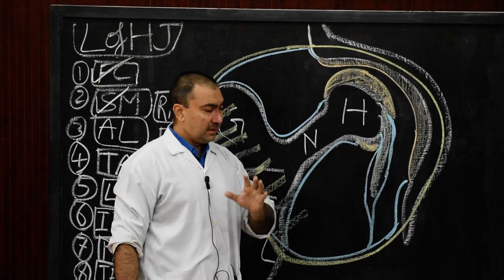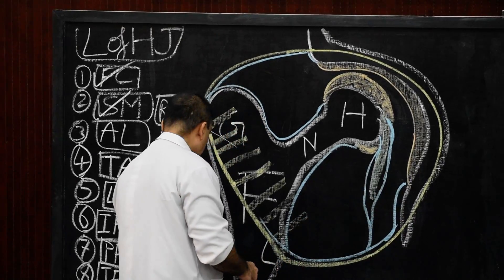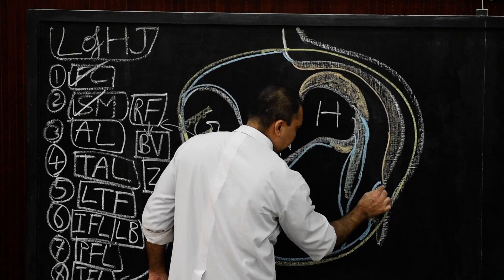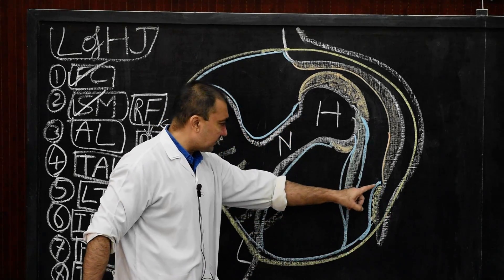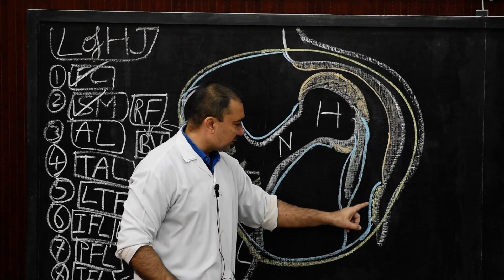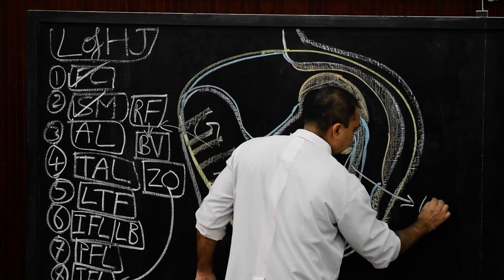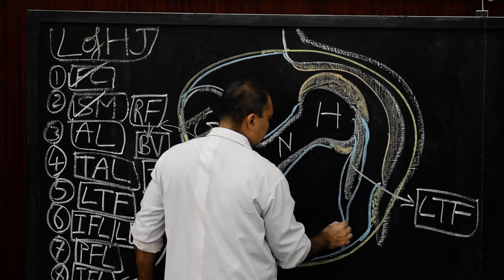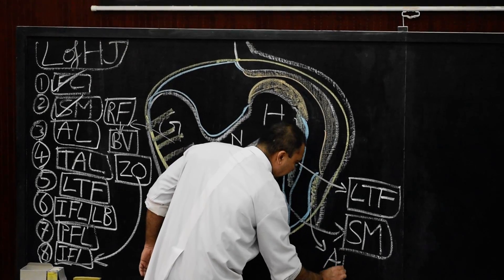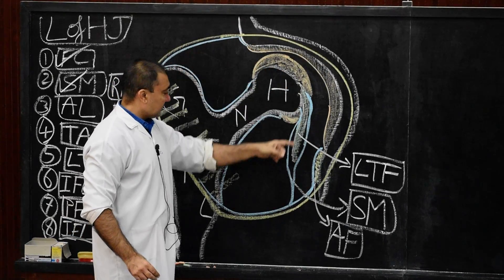Number 5 — the synovial membrane covers the acetabular fat present in the acetabular fovea. There is a large amount of fat in the acetabular fovea, called acetabular fat, and the synovial membrane covers it. This completes the description of the entire synovial membrane.